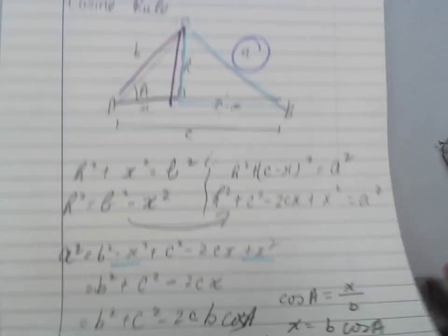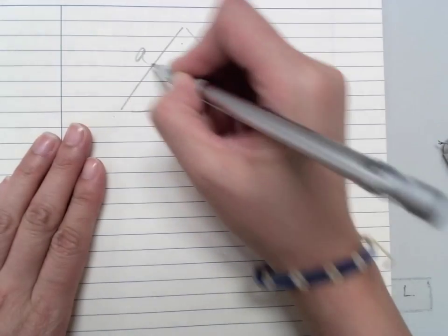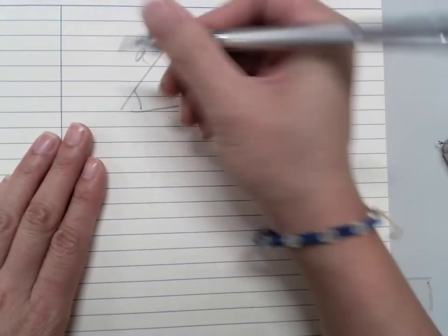But if we got a case where we have another triangle, we only have the three sides A, B, and C, and we need to find the angle.